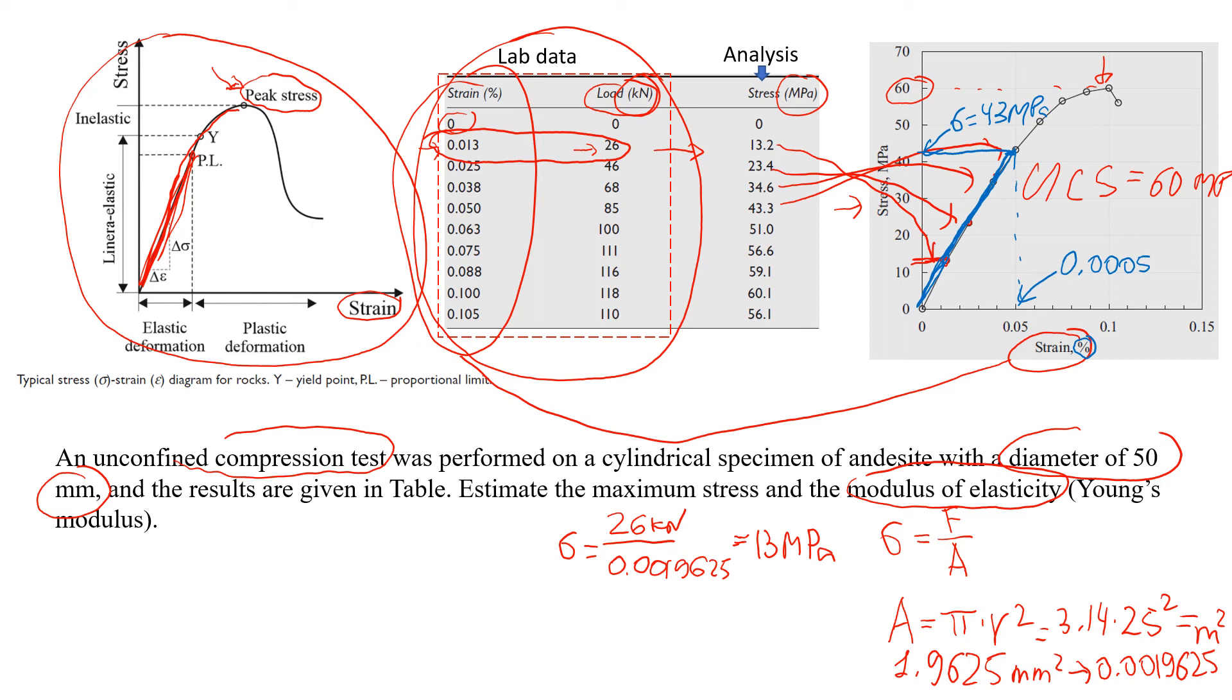What we're going to do next is basically we're just going to look at this inclination of this curve. In this case, the Young's modulus, which we use E, is equal to change in stress divided by change in epsilon, which is strain. So in this case, 43.3 divided by 0.0005, that will give us approximately 86,600 MPa.